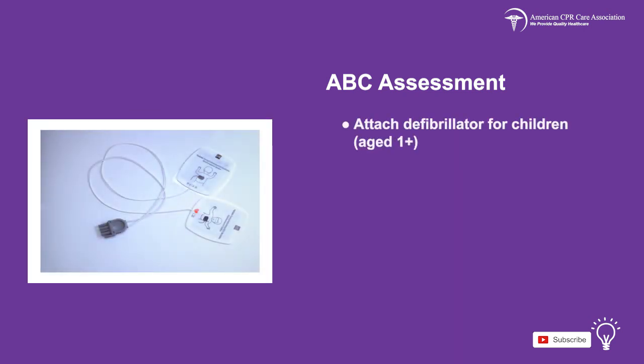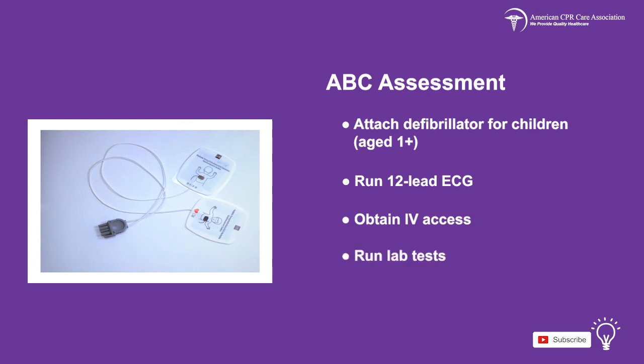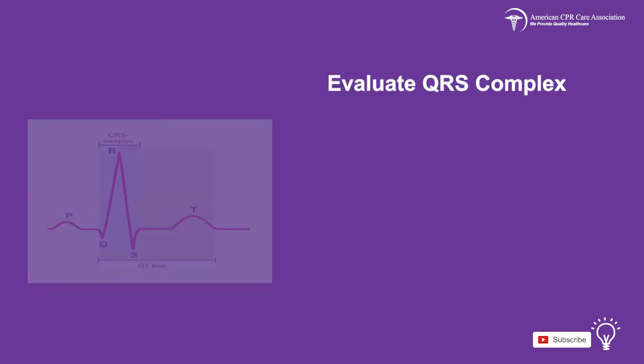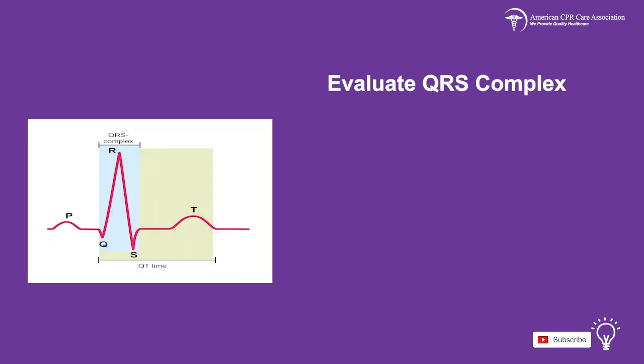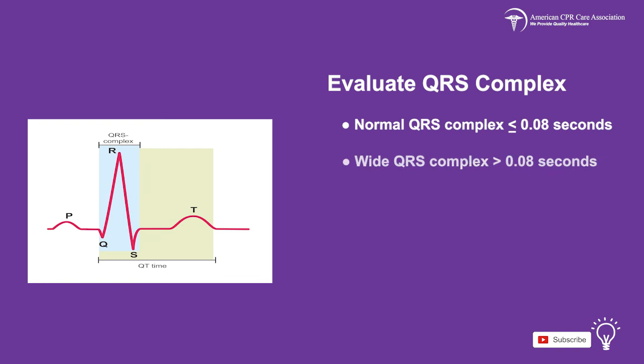Next, attach a defibrillator for children over 1 year old and obtain a 12-lead ECG. Then obtain vascular access and run lab tests to give more information on the child's status. You should evaluate the QRS complex and identify it as either normal or wide. A normal QRS complex is defined as less than or equal to 0.08 seconds, whereas a wide QRS complex is defined as greater than 0.08 seconds.